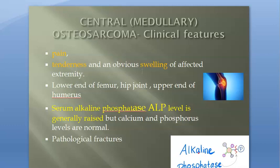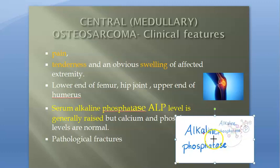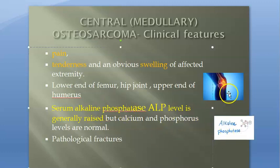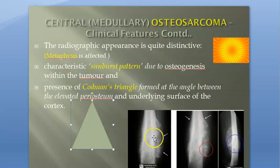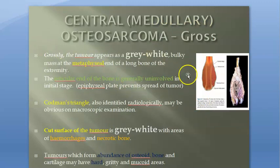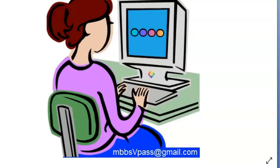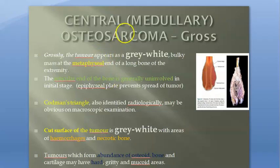The tumor can spread to other bones, lungs, and brain. Clinical features include pain, tenderness, and swelling especially around the knee joint. Alkaline phosphatase (ALP) will be raised, and patients can have pathological fractures. On X-ray, you will see the sunburst pattern and Codman's triangle. If metastasis to the lungs or brain is suspected, CT or MRI should be performed.